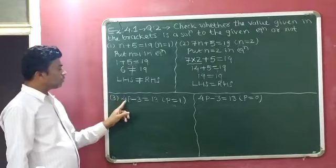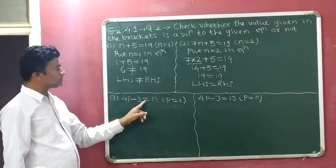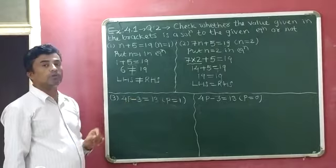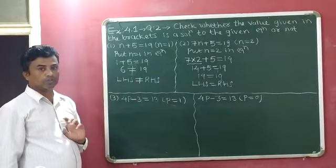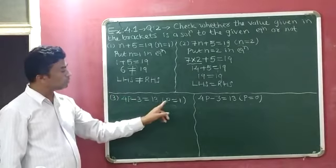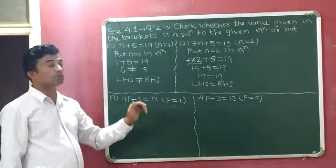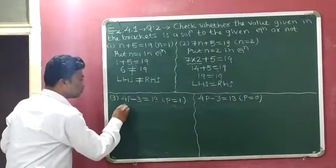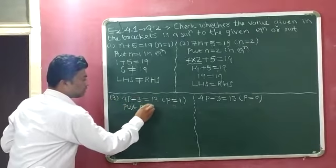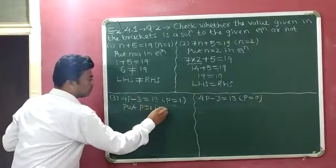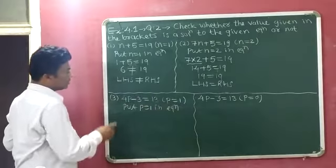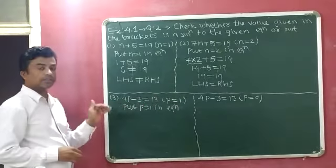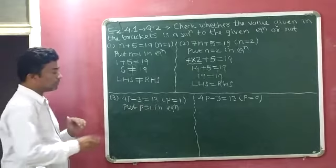Question number 3: 4P minus 3 is equal to 13, and P equals 1 is the solution given to us. First, we will substitute P equals 1 into the given equation. Our equation is 4P minus 3 equals 13.